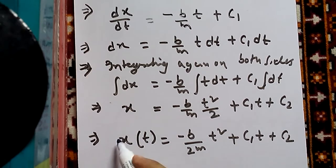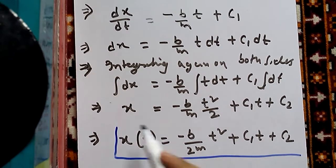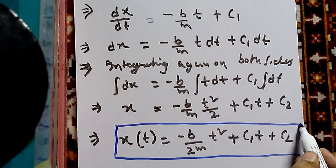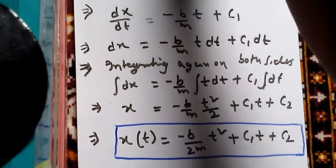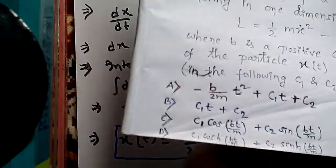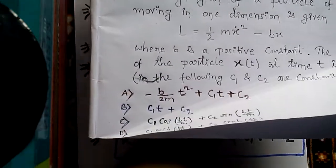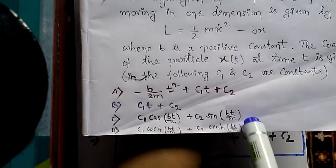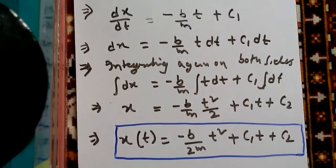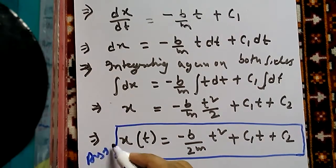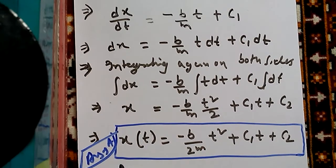We have found the value of x(t) using Lagrange's equation — putting the value of L inside Lagrange's equation and solving for x, using integration twice. This matches answer choice A, so the answer is A.